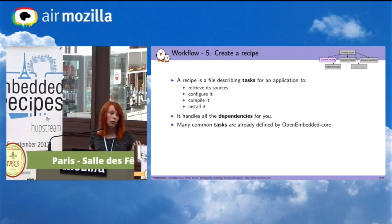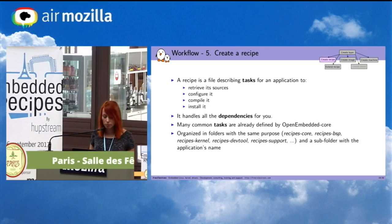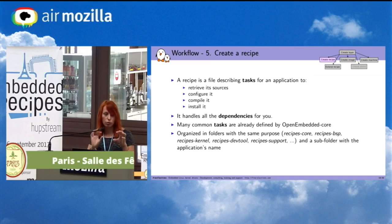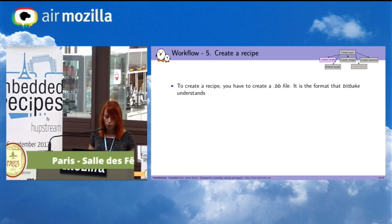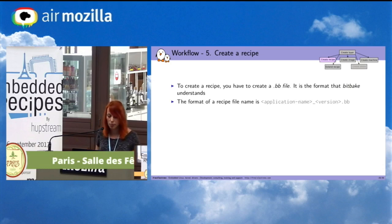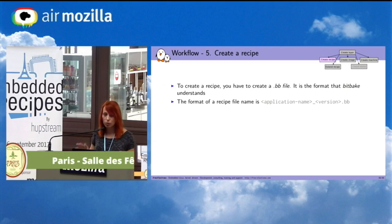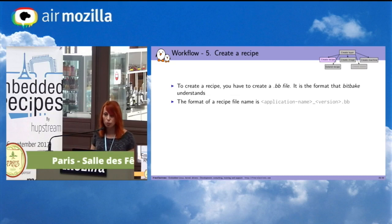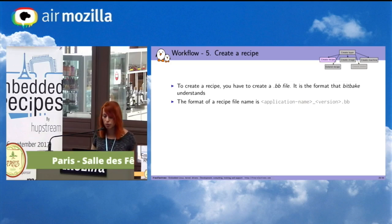There are many common tasks defined in OpenEmbedded Core, organized in folders with the same purpose — recipes-core, recipes-bsp, and others — with a subfolder for the application name. To create a recipe, you create a .bb file. The format of the recipe filename is: application-name_version.bb. You must keep this format because BitBake, when parsing files in your layer, will use the underscore to find the application name on the left and the version on the right.